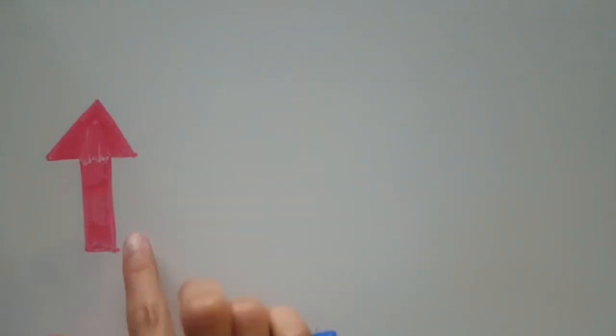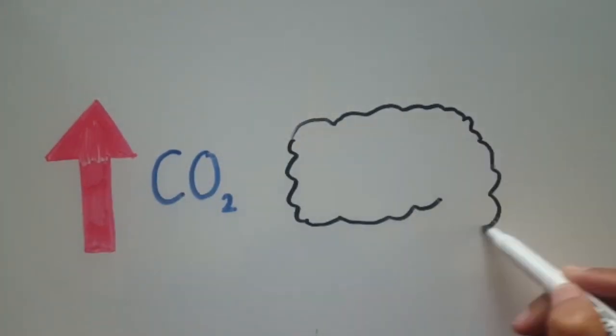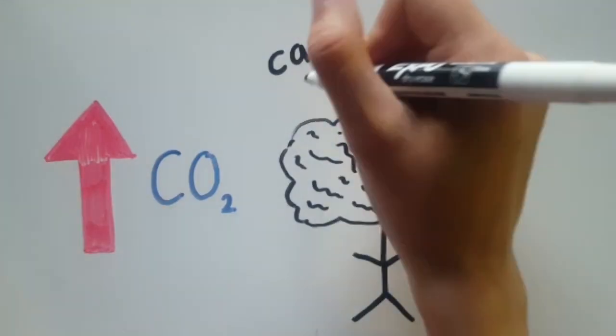Elevated levels of carbon dioxide have a negative effect on the human brain. If levels are too high, it can impair our learning and decision making.